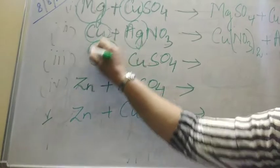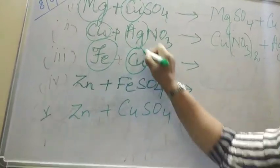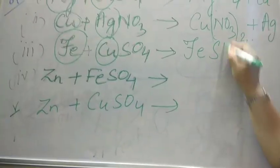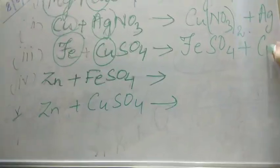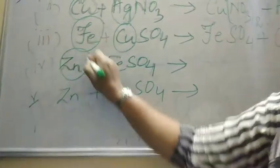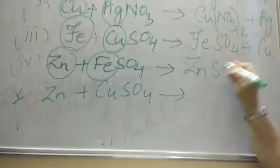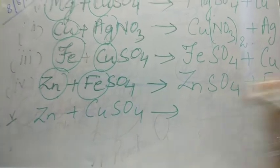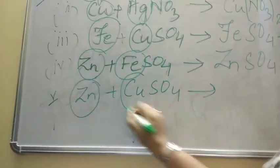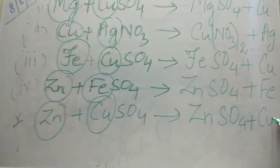Iron. Here the metal is iron and copper. So iron is more reactive, so it will become FeSO4 plus Cu. Here Zn and iron, Zn is more reactive, so ZnSO4 plus Fe. Here Zn and Cu, Zn is more reactive, so ZnSO4 plus Cu.